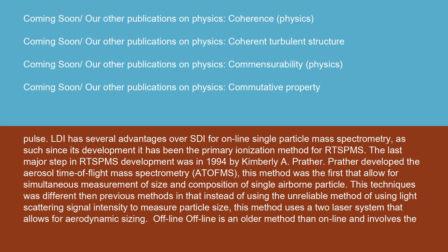The last major step in RTSB-MS development was in 1994 by Kimberly A. Prather. Prather developed the aerosol time-of-flight mass spectrometry (ATOFMS). This method was the first that allowed for simultaneous measurement of size and composition of single airborne particles. This technique was different than previous methods in that instead of using the unreliable method of light scattering signal intensity to measure particle size, it uses a two-laser system that allows for aerodynamic sizing.